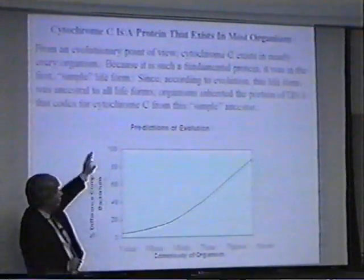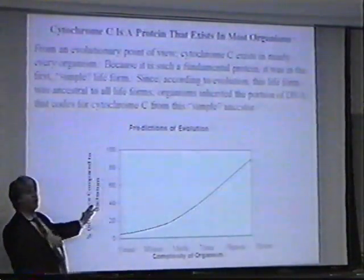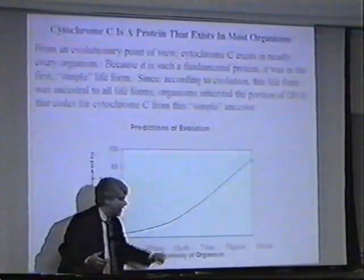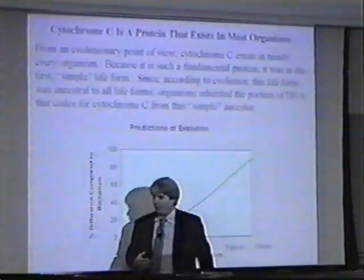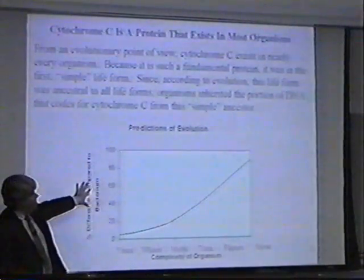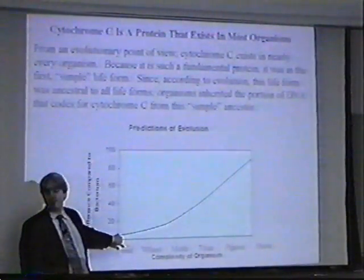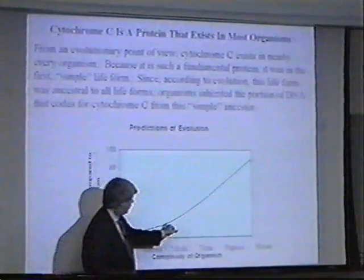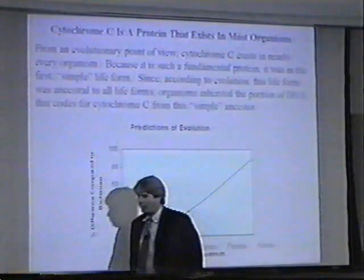If I were to take a bacterium and look at its cytochrome C, and compare how different it is with these creatures' cytochrome C, I would expect a line that looks like this. Since the bacterium is the simplest life form, I would expect the yeast to be the least different from it — the most similar. I would expect the wheat to be a little more different, the moth to be a little more different, all the way up until the horse is the most different.